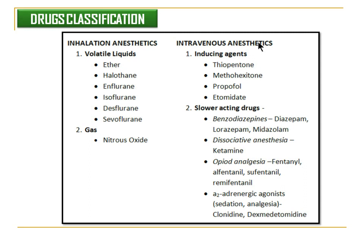In the category of intravenous anaesthetics, they can be classified into inducing agents and slow-acting anaesthetics. Inducing agents include drugs like thiopentone, methohexitone, propofol, and etomidate. Slow-acting anaesthetics include benzodiazepines such as diazepam, lorazepam, and midazolam; dissociative anaesthetics such as ketamine; and opioid anaesthetics including fentanyl, alfentanil, sufentanil, and remifentanil.